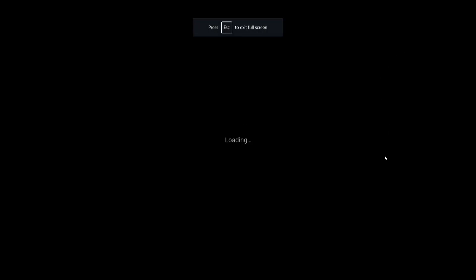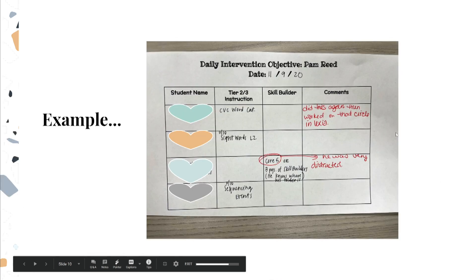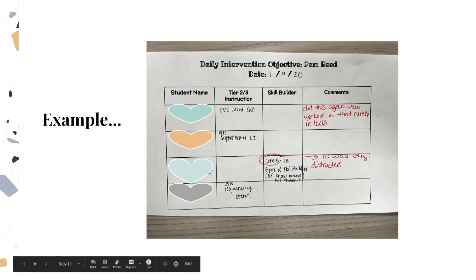Here is an example of a completed agenda with additional comments. This interventionist had four students — three needed a struggling lesson delivered, and one was assigned a skill builder or given the choice to work on Core 5 with assistance. Comments included a note that one student was very distracted, explaining why they didn't get far on Core 5 that day, and another note on how a student did with the CVC word category struggling lesson.